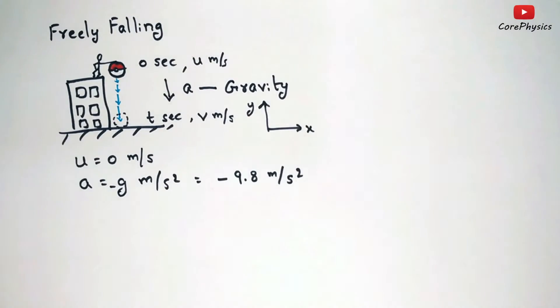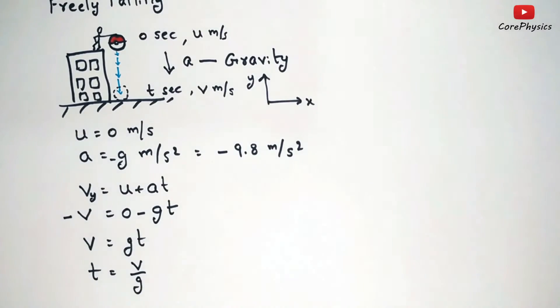And just before the impact with the ground the ball has velocity v in the negative y direction. So we can find that v equal to gt. And the time taken to reach the ground is given by v by g which is also called time of descent.